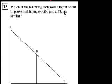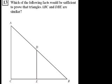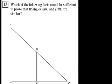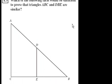Problem 13: which of the following facts would be sufficient to prove that triangles ABC — the big triangle — and triangle DBE — the small one — are similar? We have to prove that all of their angles are the same. First of all, they share the same angle: angle ABC is the same as angle DBE.